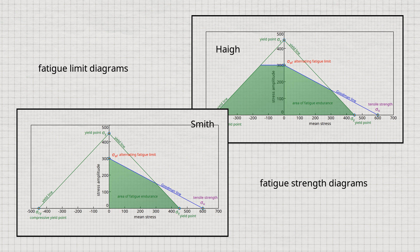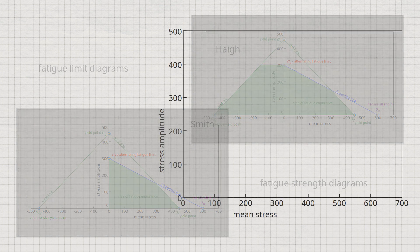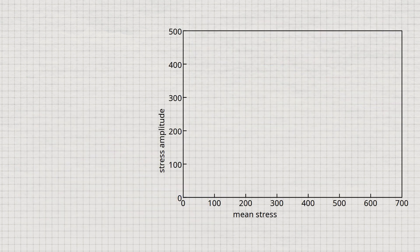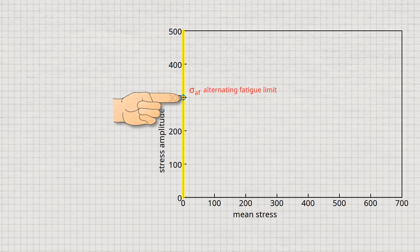In the fatigue limit diagram according to Hay, the bearable stress amplitude is plotted directly against the mean stress. Such a Hay diagram is also referred to as a Goodman diagram. If the mean stress is zero, the load is purely alternating. In this case, the fatigue limit is called the alternating fatigue limit sigma_AF. This point on the vertical axis can thus be determined in advance.